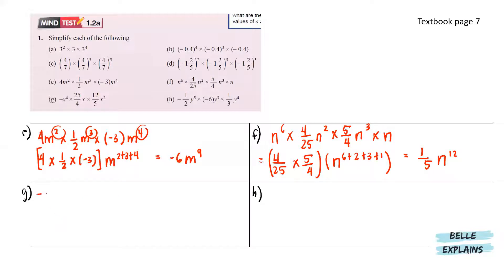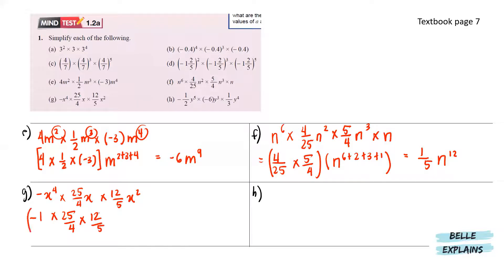For g, we have negative x to the power of 4 times 25 over 4x times 12 over 5 x to the power of 2. So let's get the numerics to one side, put them in a bracket, and write the x terms. We have powers 4 plus 1 plus 2. So that will give us negative 15, x to the power of 7.